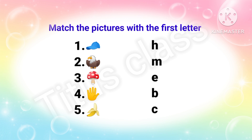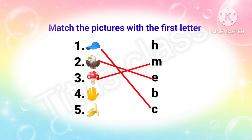Match the first letter. First one — what is this? This is cap. Cap starts with C. Second one: eagle. Eagle starts with E. Third one: mushroom. Mushroom starts with M. Fourth one: it is hand. Hand starts with H.